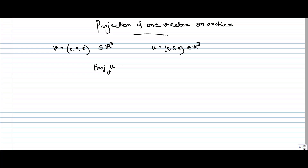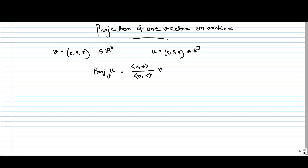From the lecture we have seen the formula to calculate it. We have to calculate the inner product of U and V, and also the inner product of V and V. Since we are calculating the projection in the direction of V, we have to multiply the vector V by this scalar. The inner product of U and V gives a scalar, the inner product of V and V gives another scalar, and we multiply that scalar with the vector V to get the projection.